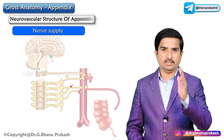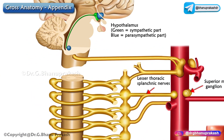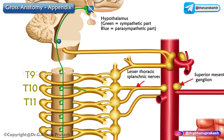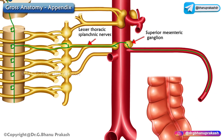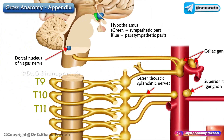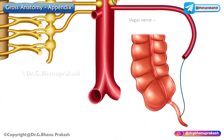Regarding nerve supply, the sympathetic nerve supply to the appendix is from the T10 spinal segments via the lesser splanchnic nerves and the superior mesenteric plexus. The parasympathetic nerve supply is from both vagus nerves.